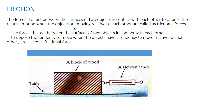Look at this picture — a block of wood on a table. These are two contact surfaces. When we pull this block of wood using a Newton balance, it is in relative motion. When the objects are moving relative to each other, there is an opposing force. That opposing force is known as frictional force.